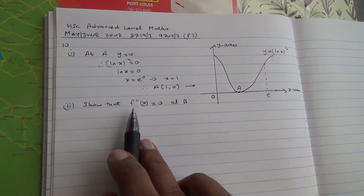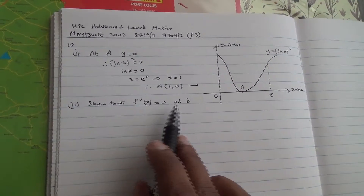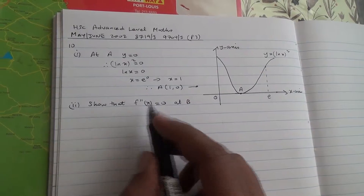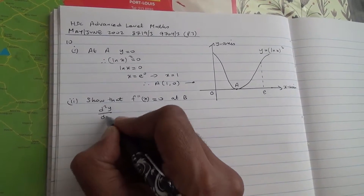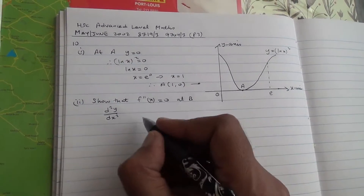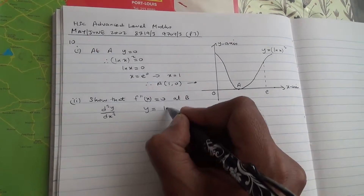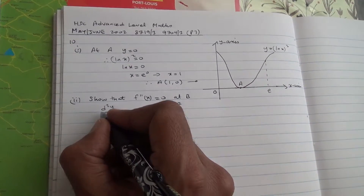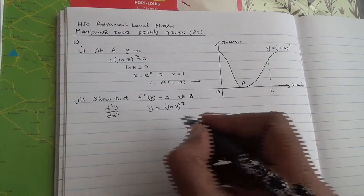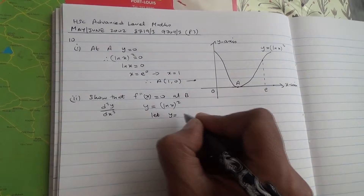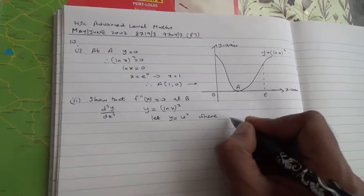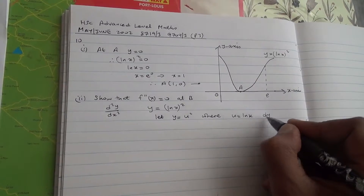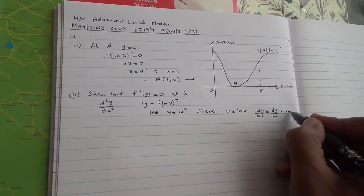For the second part, we need to show that f double-dash x equals zero at B. This is d²y over dx², the second derivative of the function. We have y equals (ln x)². To find the first derivative, let y equal u², where u equals ln x, and we use the chain rule: dy/dx equals dy/du times du/dx.